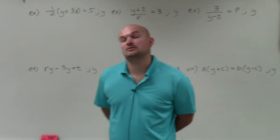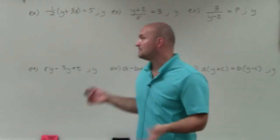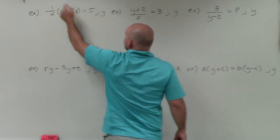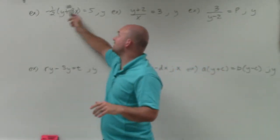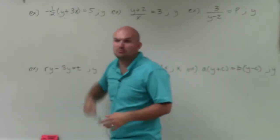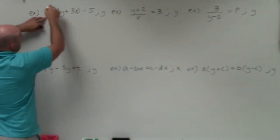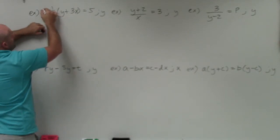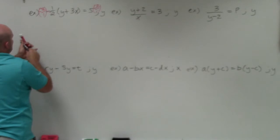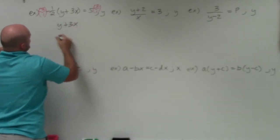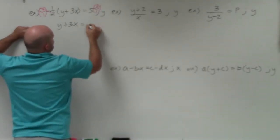This one gets a little confusing because our variable is being multiplied by negative 1½, and it's also being added by 3x. We can't just subtract 3x on both sides because that 3x is also being multiplied by negative 1½. So we have two options: distribute, or just undo the multiply by negative 1½. I'm going to choose to undo the multiply by negative 1½ by multiplying by its reciprocal, negative 2 over 1, on both sides. That gives me 1, leaving y plus 3x, equal to negative 10.